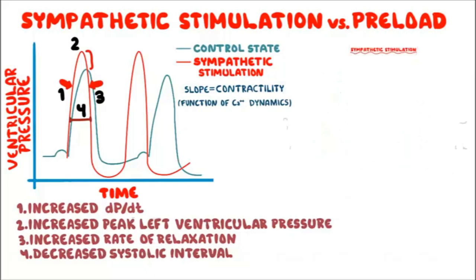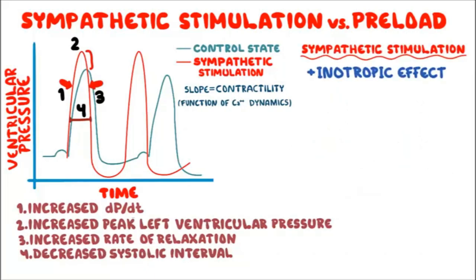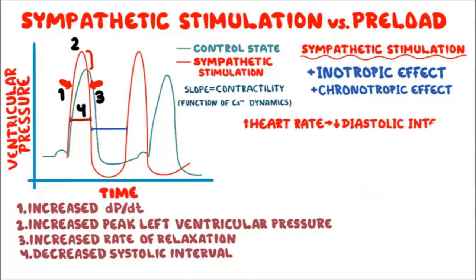In addition to the positive inotropic effect, the sympathetic system also increases heart rate via stimulation of the SA node — this is referred to as the positive chronotropic effect. Whereas contractility affects the systolic interval, heart rate determines the diastolic interval. Increased sympathetic activity to the heart increases heart rate, leading to a decreased diastolic interval. Sympathetic stimulation also increases the conduction velocity of the action potential via the AV node — this is referred to as the positive dromotropic effect.